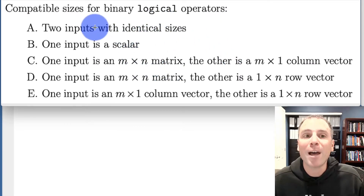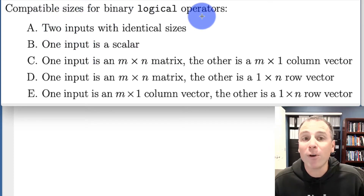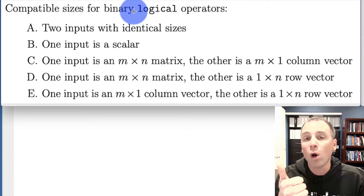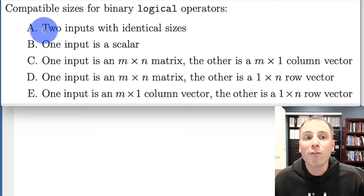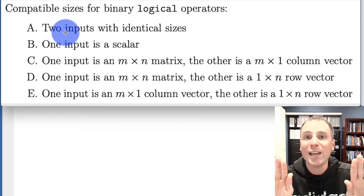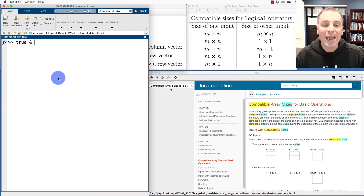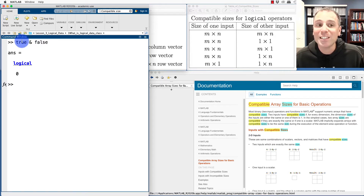Using MATLAB documentation, I'm going to refine the definition of compatible sizes to a specific list of five possibilities for binary logical operators — the OR operator, the AND operator, and more. Those binary operators operate on compatible sized arrays if they fall into one of five categories. The first is when our two inputs have identical sizes. We've seen that in all of our previous videos on binary logical operators where the left and right arguments are logical arrays with the same dimensions. For example, if we put true AND false — the left argument is true, the right argument is false — when we push enter, that becomes false. Notice the left and right are identical sizes; they're both one by one.